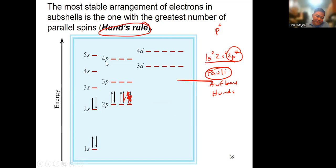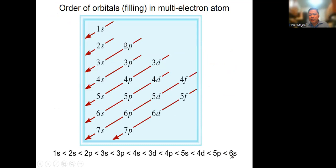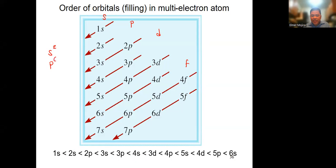When you fill up the orbitals according to energy level, you end up with a sequence. You line up all the S, then P, D, and F, and write diagonally following the sequence. An S subshell can accommodate 2 electrons, P can hold 6, D can hold 10, and F can hold 14. This is based on the number of orbitals: 1 for S, 3 for P, 5 for D, and 7 for F.